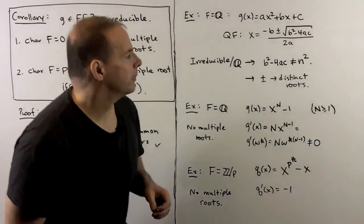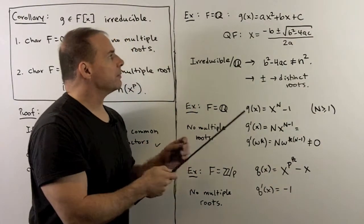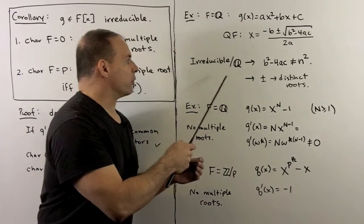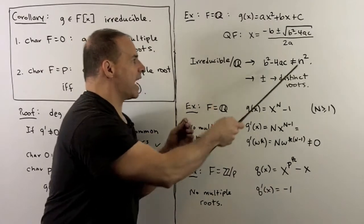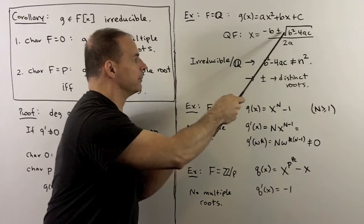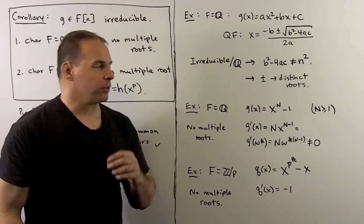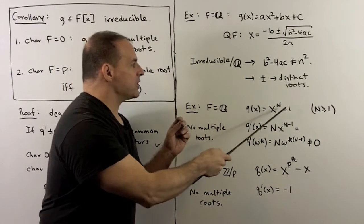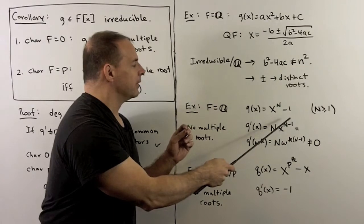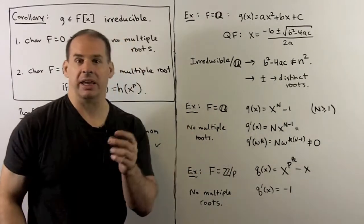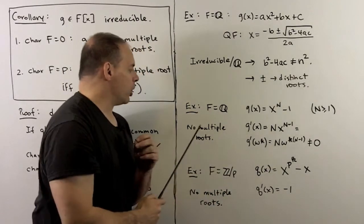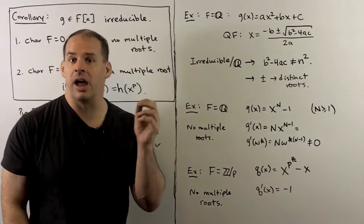For examples, first over the rationals: taking a quadratic, we can solve using the quadratic formula. For it to be irreducible over the rationals, the discriminant must not be a perfect square, and in that case we have distinct roots from the ± sign. Also over the rationals, for g(x) = x^n − 1 with n ≥ 1, the derivative is n·x^(n−1), and evaluating at any root — an nth root of unity — gives something non-zero. So this polynomial has no multiple roots, confirming there are n distinct nth roots of unity.